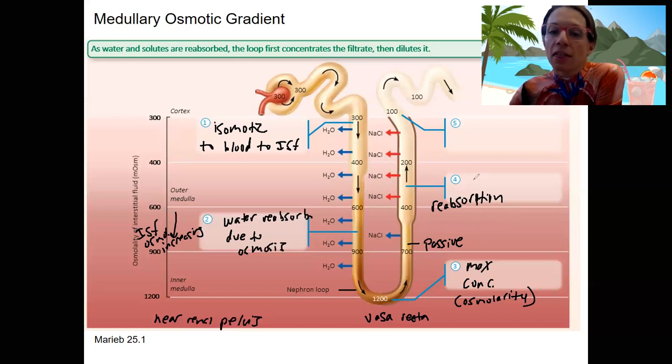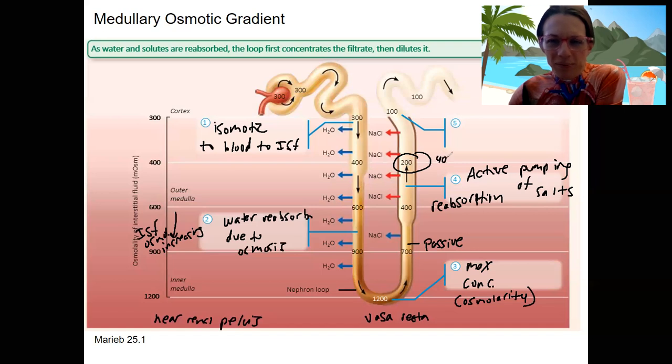Reabsorption is passive and then actively occurs via pumping of salts, the sodium, chloride, potassium. That's how we get an osmolarity in this filtrate that's lower than the ISF. How can it be lower in here than out there? Only through active pumping. Otherwise it would be in equilibrium. We're pumping out more solutes using ATP to lower the filtrate concentration even lower than it would be without active pumping. That allows this to be lower osmolarity on the ascending loop than the descending and ultimately reach 100, which is very low osmolarity.